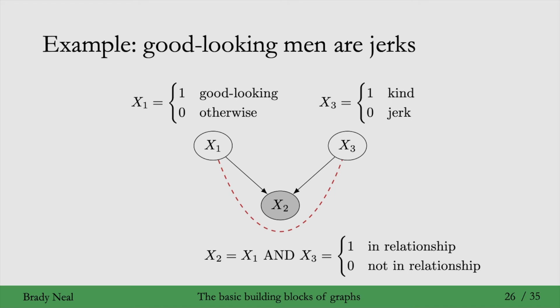all of the men who are not in a relationship and are good-looking are jerks in this example. So, because we condition on not in a relationship, we actually do see an association between x1 and x3.